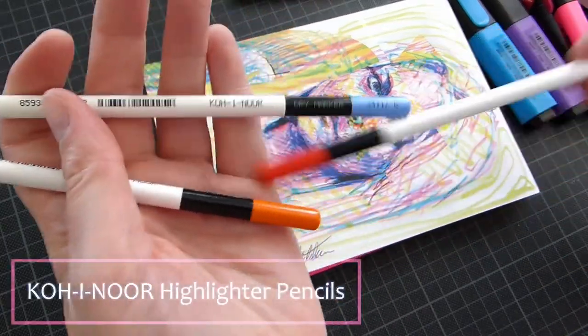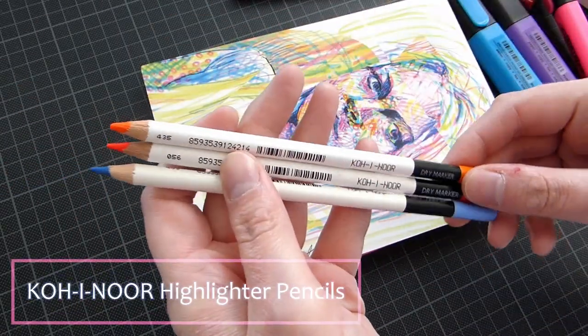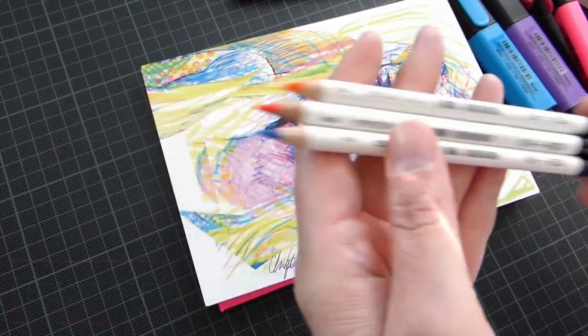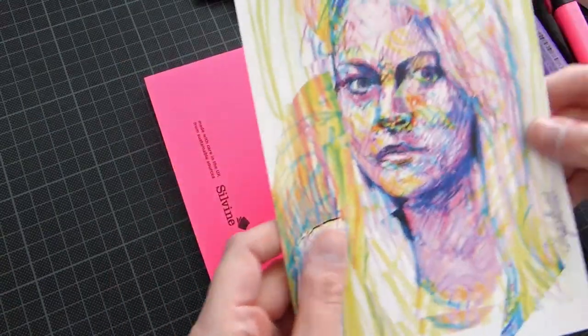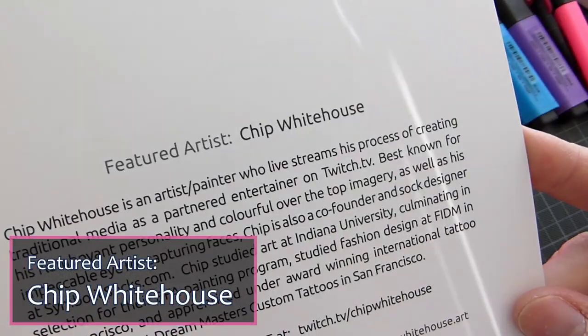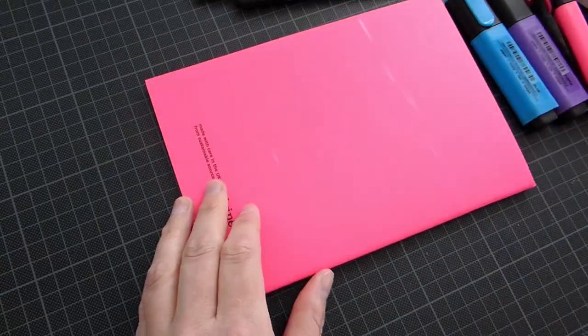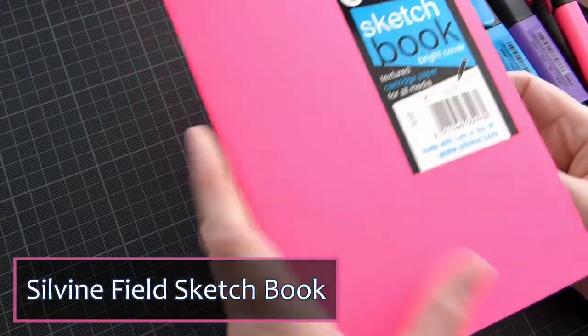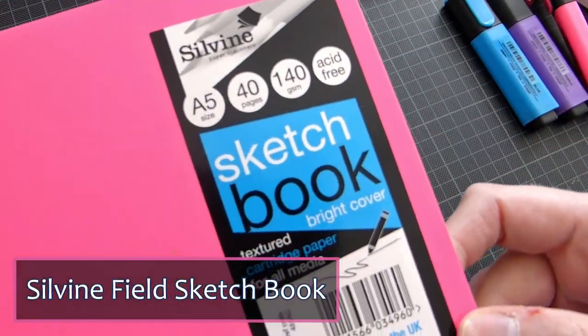In the box was the Staedtler Triplus mobile office with a fine liner, a blue ballpoint pen, highlighter in neon yellow, and a mechanical pencil. We also got some Koh-i-Noor highlighter pencils.